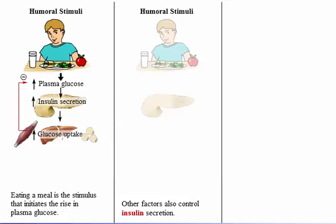These other factors include humoral factors like plasma concentrations of amino acids, hormonal factors like glucose-dependent insulinotropic peptide (GIP), and activity of the autonomic nervous system.